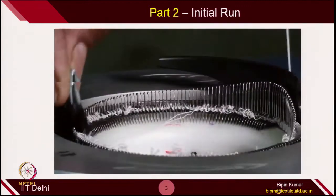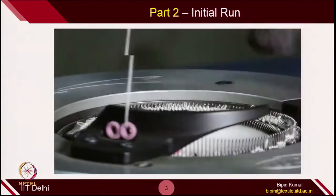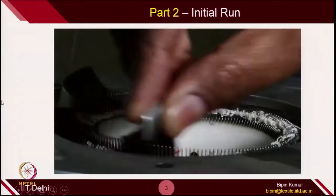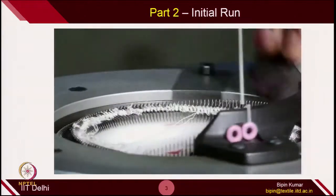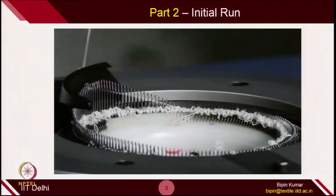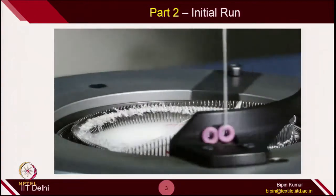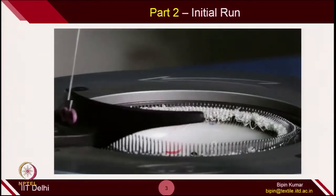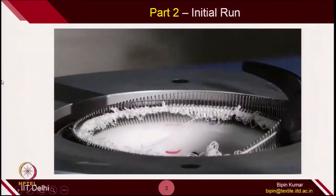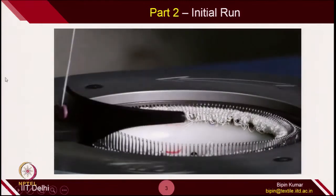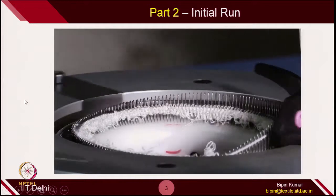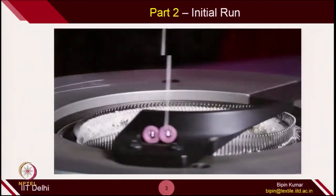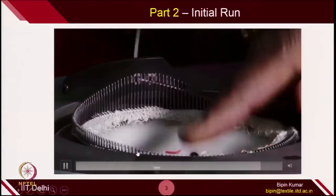Once the needle catches the yarn and the first loop is generated, you will find some uniformity in the motion, because the yarn itself helps in latch opening and closing. Knitting action starts repeating in each needle, and this is how the fabric gets created. The first few cycles are a little bit complicated and you will not observe very uniform fabric. But once all the needles catch the yarn and loops are being formed in all needles, you will observe more uniform production.